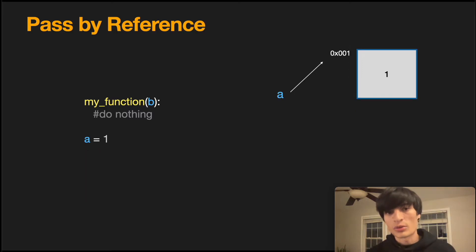Now in a pass-by-reference language, we get an entirely different behavior. When we call my function, variable b is created, but it points to the same exact address. Any changes done to a or b will be reflected within both variables.